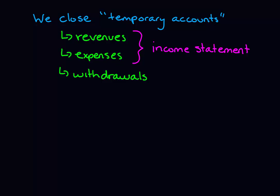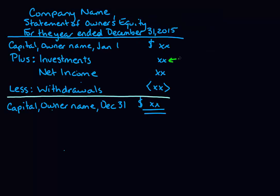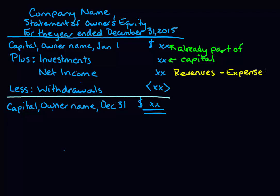Let's take a look at our statement of owner's equity for just a moment. It starts out with our capital account, we add in investments, we add in net income or subtract net loss, and we take away our withdrawals for the year. That gives us a closing balance at the end of the year. Anything that's part of owner's equity is getting wrapped up into that capital account at the end of the year. So capital is already the capital account, so we don't need to close it. Investments are already part of the capital account — we don't have a separate investment account. So what we're closing are the net income accounts, which are revenues minus expenses, and we're closing the withdrawals account, and those are getting put into the capital account at year end.